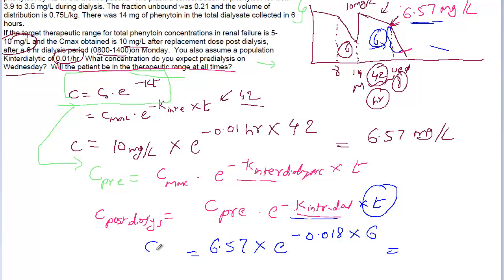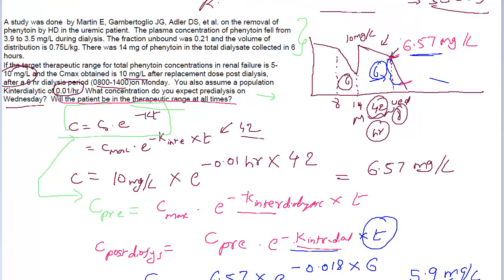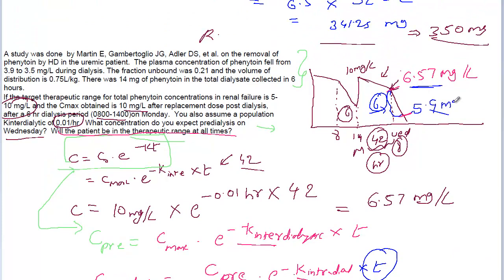Using this equation, the post-dialysis concentration comes out to approximately 5.9 mg per liter. So the concentration at the end of dialysis is 5.9 mg/L, the pre-dialysis concentration was 6.57 mg/L, and the Cmax was 10 mg/L. All concentrations from 10 down to 5.9 mg/L are within the therapeutic range of 5 to 10 mg/L. Therefore, the patient is within the therapeutic range at all times.